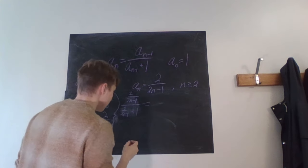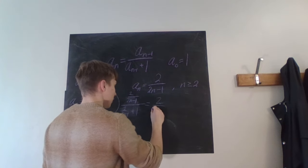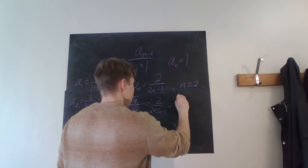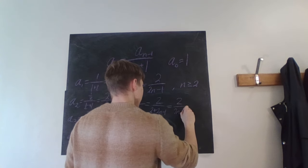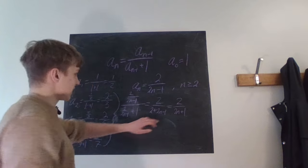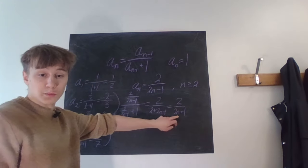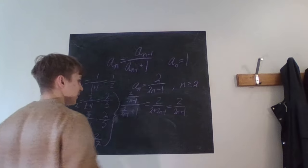And then we multiply by 2n minus one everywhere. So we get two over two plus 2n minus one, which equals two over 2n plus one, which is exactly what I just wrote before and what you will get if you input this into there.